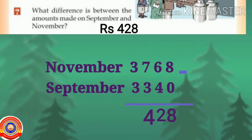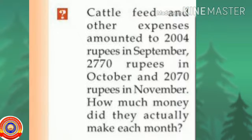Activity continues: cattle feed and other expenses amounted to 2004 rupees in September, 2770 rupees in October, and 2070 rupees in November. How much money did they actually make each month?